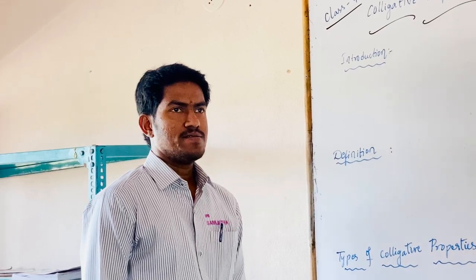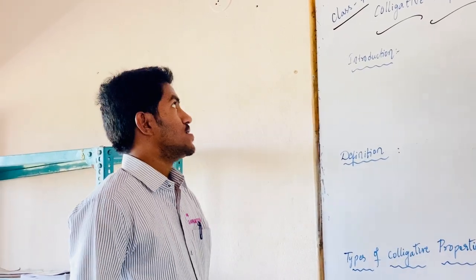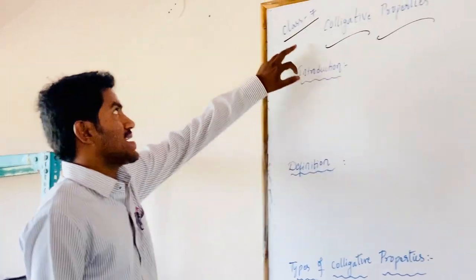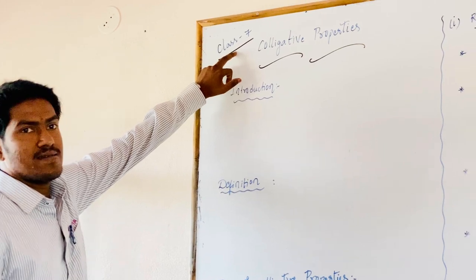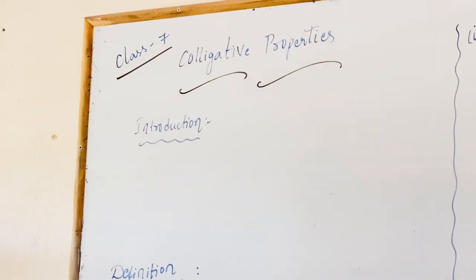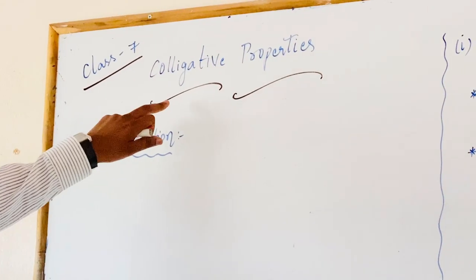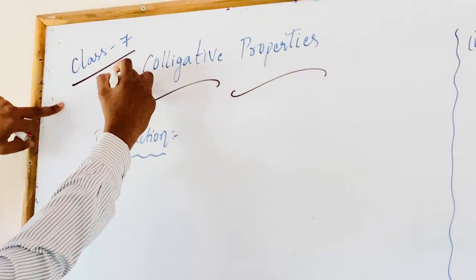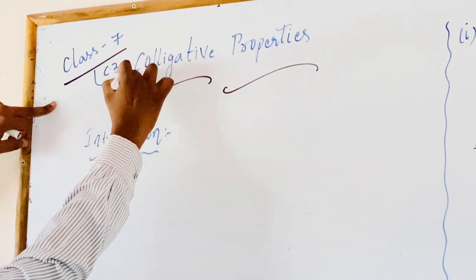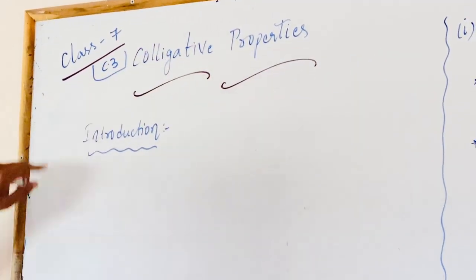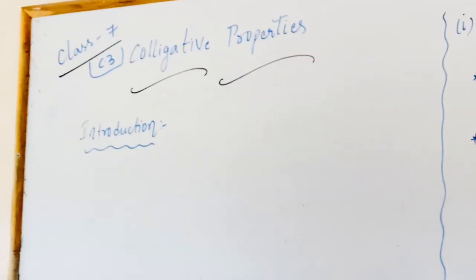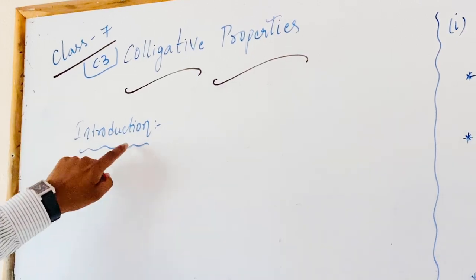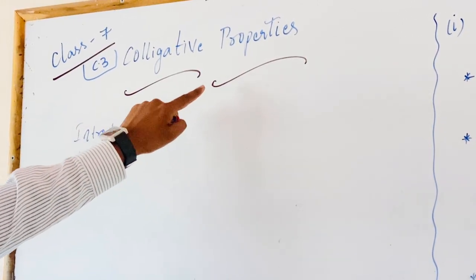Good morning all of you. Today's session is for class 7 and the chapter name is Colligative Properties. It is within page number C3. Now coming to the introduction part of Colligative Properties.